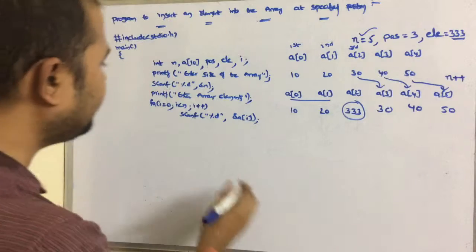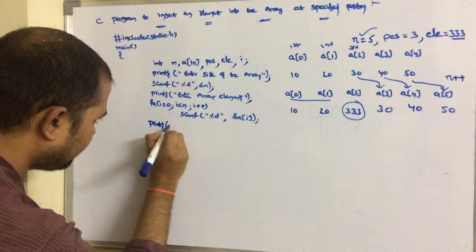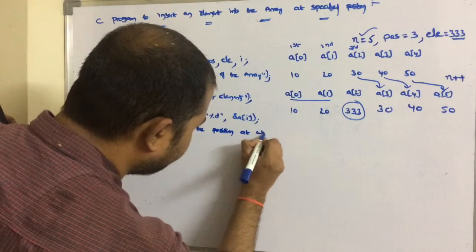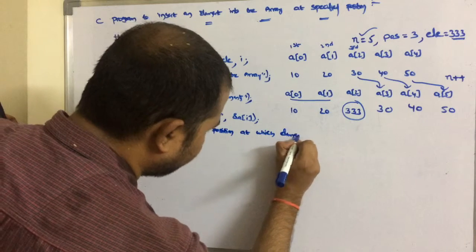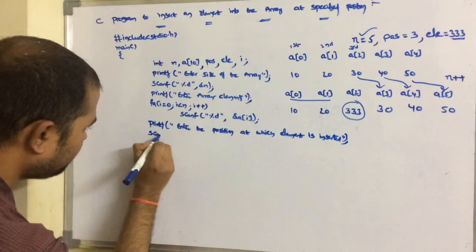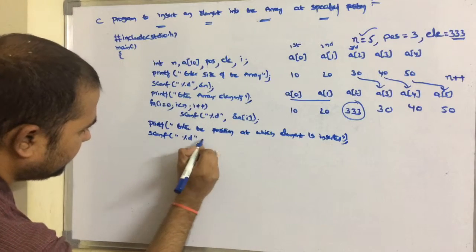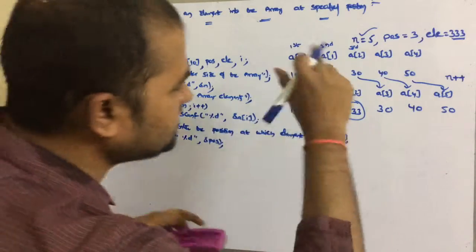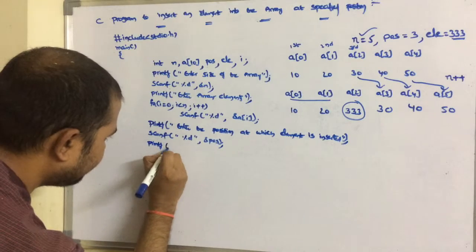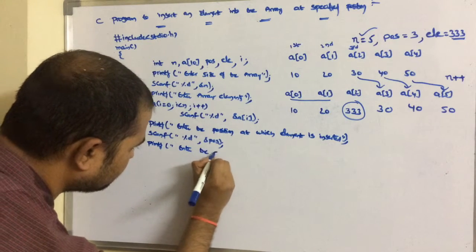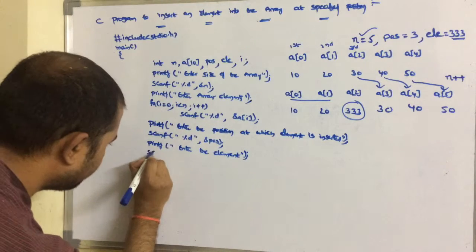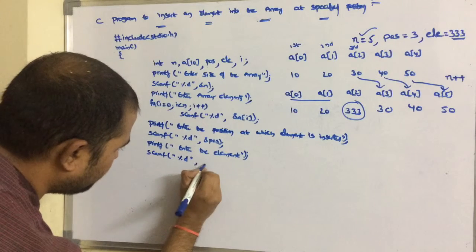The next input variables are position and element. So printf enter the position at which the element is to be inserted, then scanf %d ampersand POS. Let the position value be 3. Next, printf enter the element to be inserted, and the element variable is declared as ELE, with scanf %d ampersand ELE.